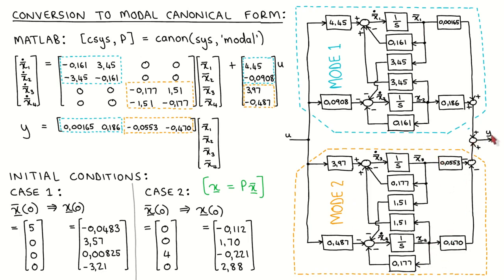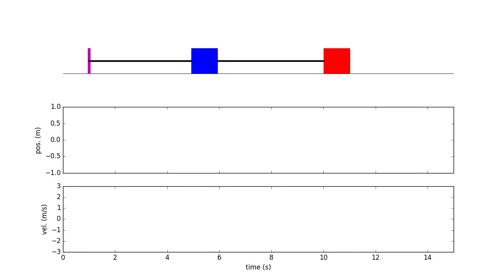Since the input and initial values of the states of the second mode are all zero, its contribution to the output will be zero. We therefore expect the system to exhibit the natural response of the first mode: an exponentially decaying sinusoidal signal with a period of 1.8 seconds. To find the initial conditions in terms of the original states, we multiply the transformation matrix p with the initial modal states. The initial original state vector is then used to set the displacements and velocities of both objects.